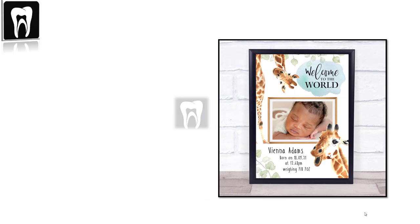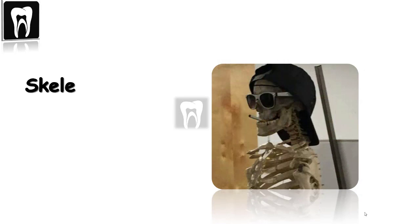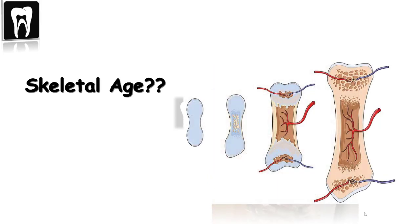First, let's talk about the difference between skeletal age and chronological age, or birth age. Birth age is calculated from the date of birth — from when you were born. But skeletal age, or bone age, shows your bone maturation and growth. Bone maturation is a measurement of mineralization, ossification, and the developing size and shape of your bone. So your skeletal age can be ahead of or behind your birth age.